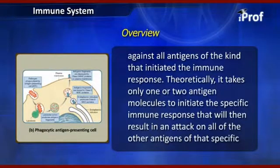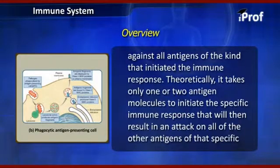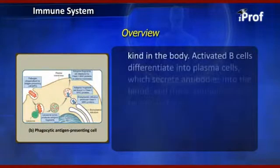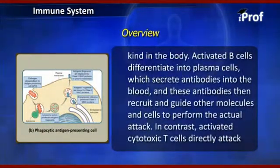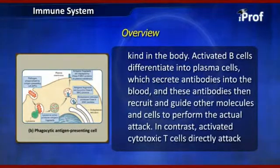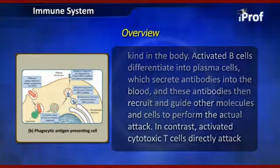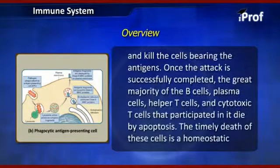Theoretically, it takes only one antigen molecule to initiate the specific immune response that will result in an attack on all other antigens of that specific kind in the body. Activated B cells differentiate into plasma cells, which secrete antibodies into the blood, and these antibodies then recruit and guide other molecules and cells to perform the actual attack. In contrast, activated cytotoxic T cells directly attack and kill the cells bearing the antigens.